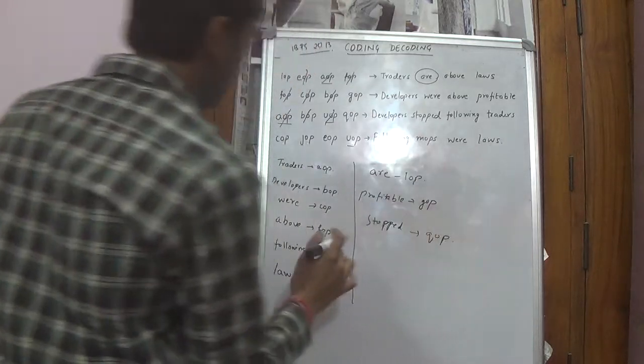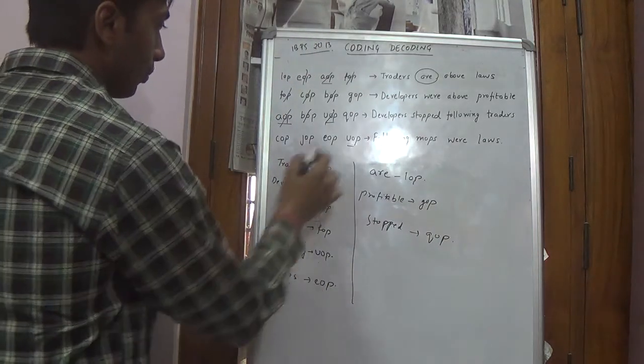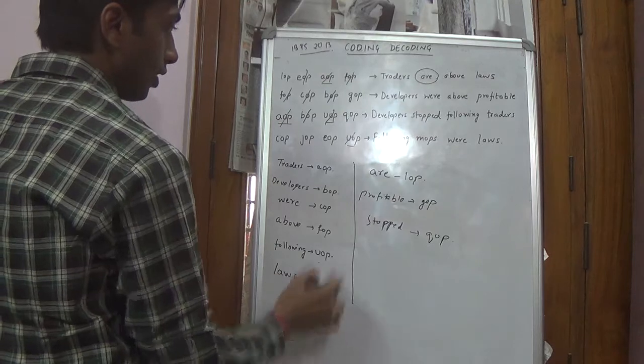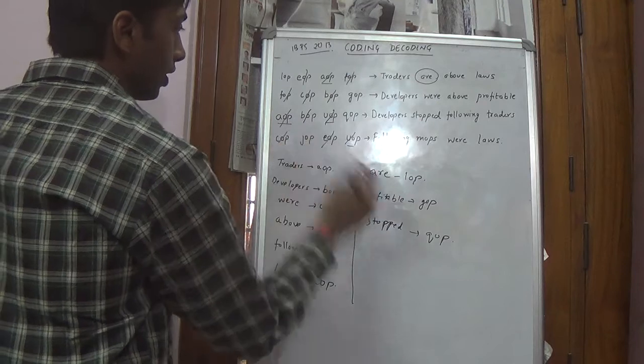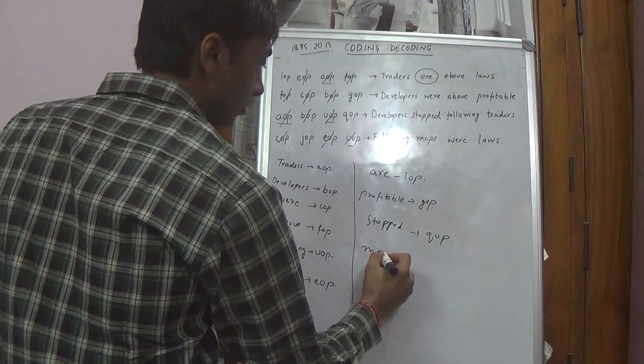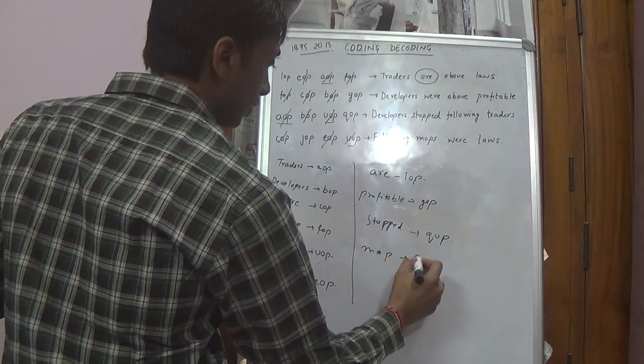Last is following maps were laws. Following we have UOP. Laws we have EOP. Maps we don't have. Were we have COP. So map is JOP.